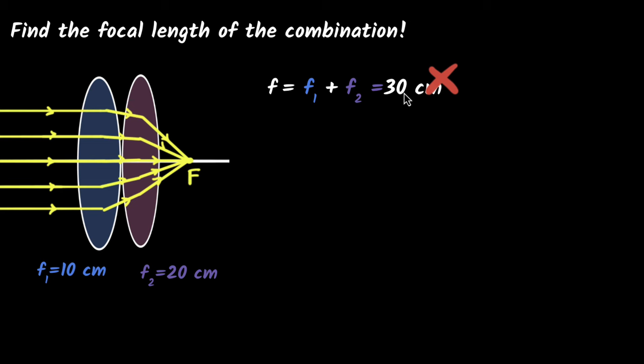So how do I figure it out? Focal length doesn't add up. But wait, because the convergence is happening together, this is being converged and this also gets converged, the convergence adds up, which means the power adds up. And so power will be useful over here. So what we can do is we can first find the powers, which we already did in the previous slide. So we've already found the power here is 10 and the power here is five. Now I can say the total power of this system, that should be P1 plus P2. The total power adds up and that would be 15 diopters.